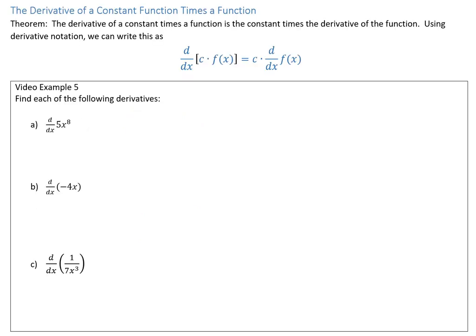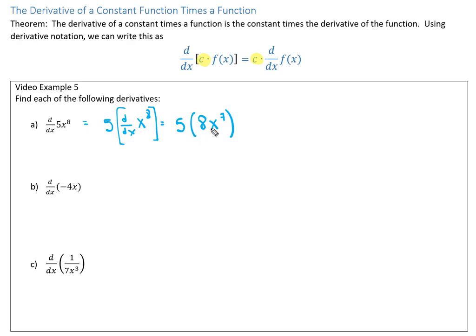Another rule is the derivative of a constant times a function. If you have a constant inside your derivative, you can pull it outside, and then take the derivative of the function that's left. For example, d/dx of 5 times x to the 8th equals 5 times the derivative of x to the 8th, which is 8x to the 7th. So you multiply the 5 times 8 and get 40 times x to the 7th.